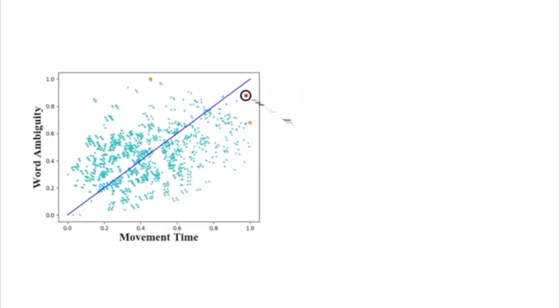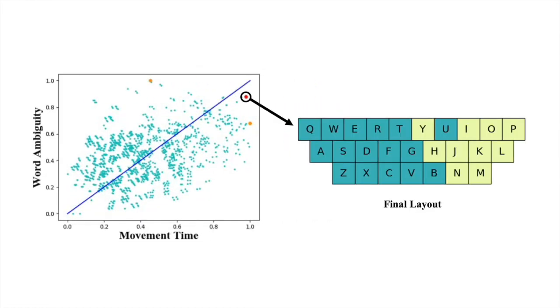Using the data from our studies, we performed a stepwise search and identified an optimal layout that improved both word ambiguity and typing speed.